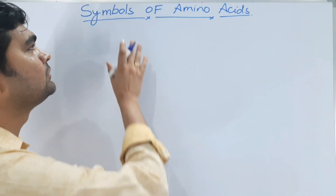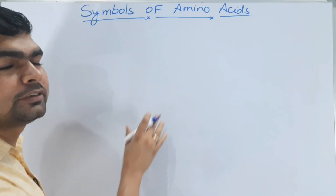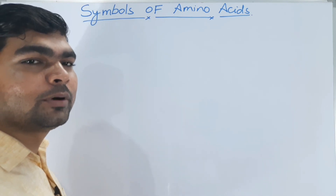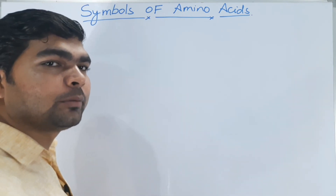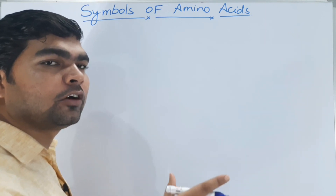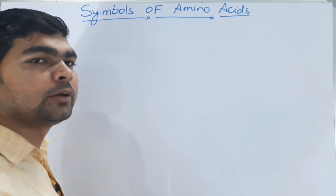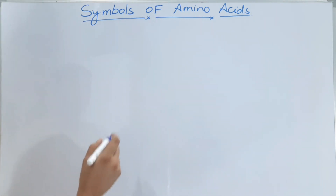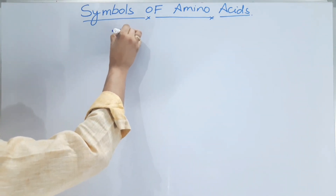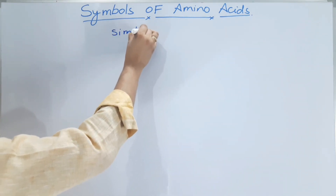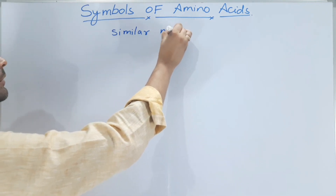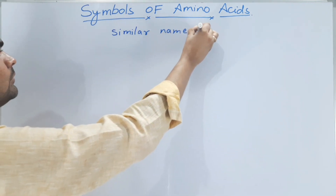Friends, now let's talk about the symbols of amino acids. It is very simple to remember, but there are two types: amino acids whose symbols are similar to their names, and amino acids whose symbols are not similar to their names. First we will talk about the amino acids with similar name symbols.